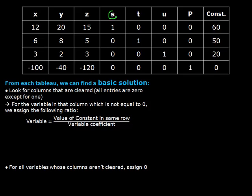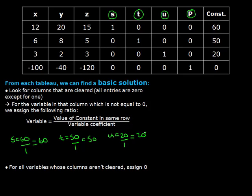From this tableau, we can find a basic solution. To do this, we look for all columns that are cleared, meaning all entries in that column except for 1 equals 0. Here, this would be the columns for s, t, u, and p. For the variable in that column, we calculate its value to be equal to the value of the constant in the same row over that variable's coefficient. For all the remaining variables, we assign their value to be 0. In this basic solution, x, y, and z equals 0, s equals 60, t equals 50, u equals 20, and p equals 0.